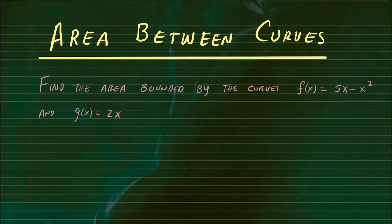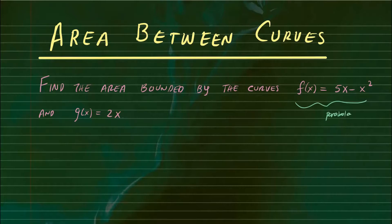Welcome everyone. In this video, we're going to find area between curves. So let's take a look at this problem. We want to find the area bounded by the curves f of x and g of x. Here f of x is 5x minus x squared, which is a parabola facing downward. And g of x is just a line passing through the origin.